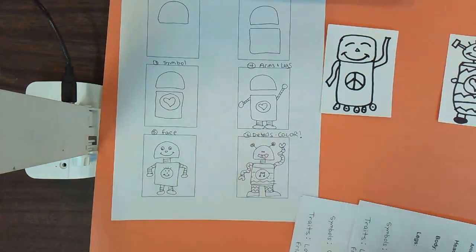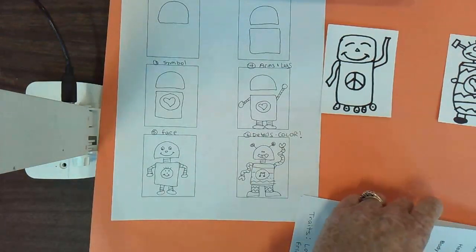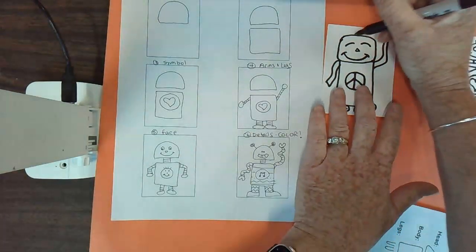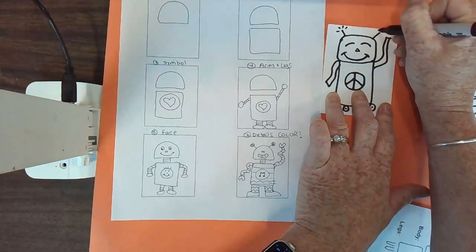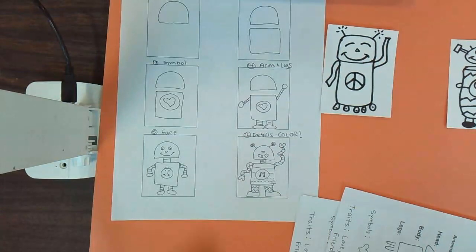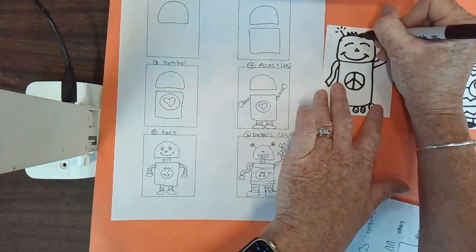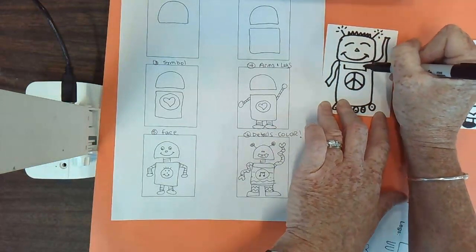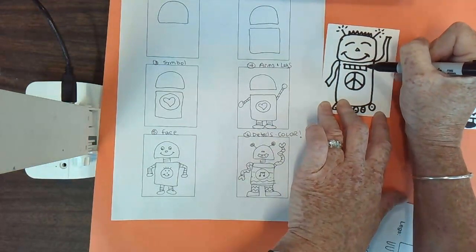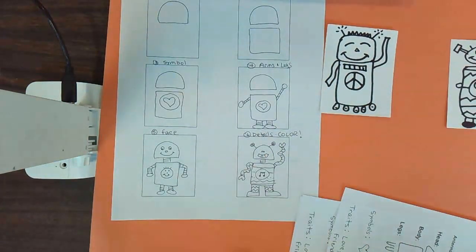And then the last step is to add details and color. So I did, you could add some antennas if you want. You could add some, and again, all different ways are fine. Maybe a little hair on this guy I can make. Maybe he has a little button panel like a lot of robots have some buttons and different knobs and things.